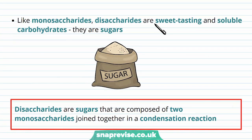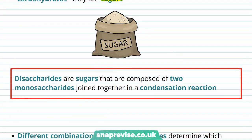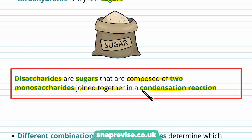Disaccharides have some similar properties to monosaccharides — they are sweet tasting and soluble, for example they dissolve in water or in the blood, so we can still term them as sugars. When defining a disaccharide, be specific: a disaccharide is a sugar composed of two monosaccharides joined together in a condensation reaction. It's two monosaccharides, not just two monomers, and it's made through a condensation reaction.